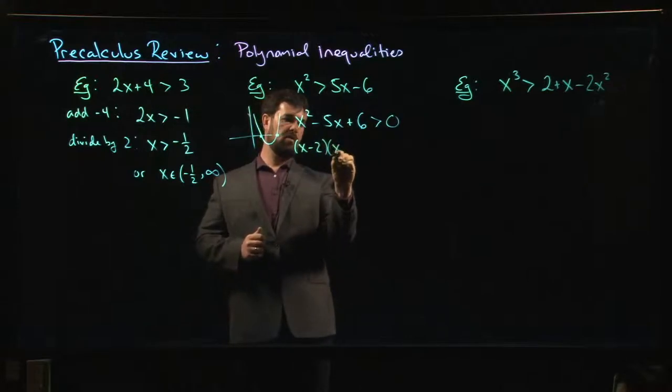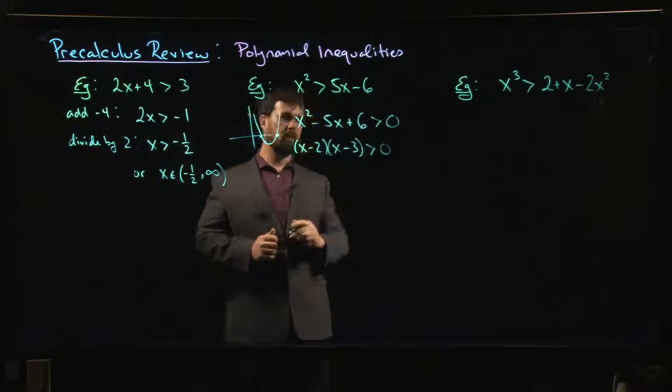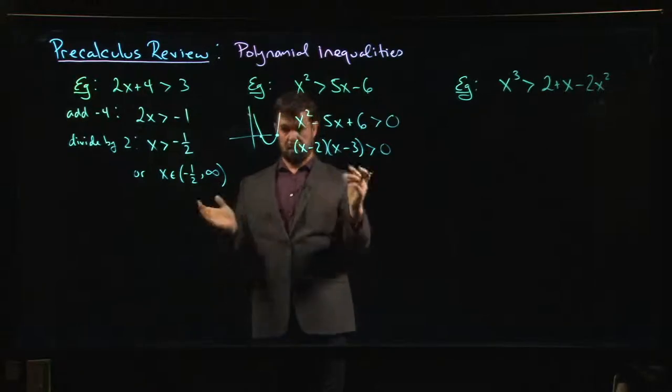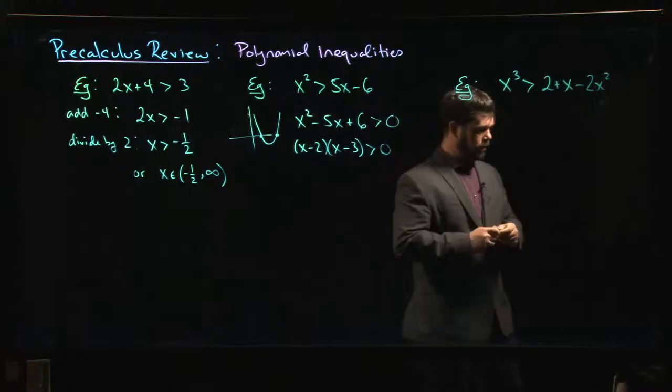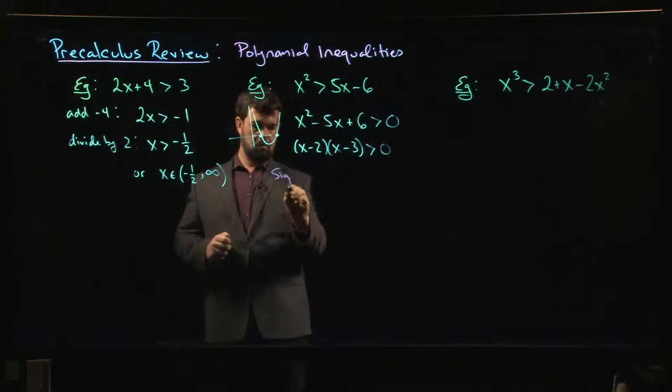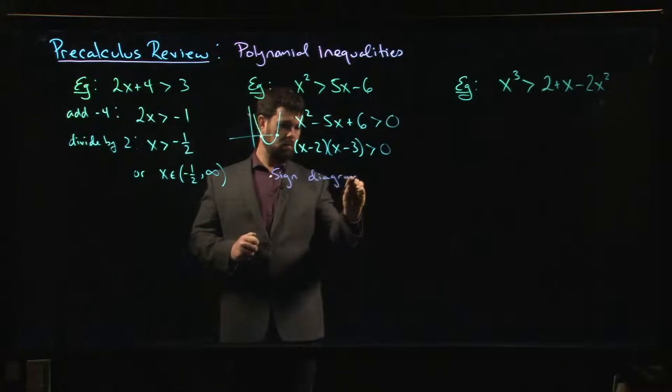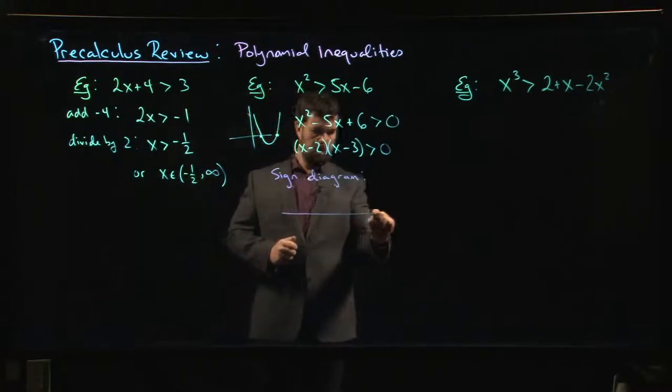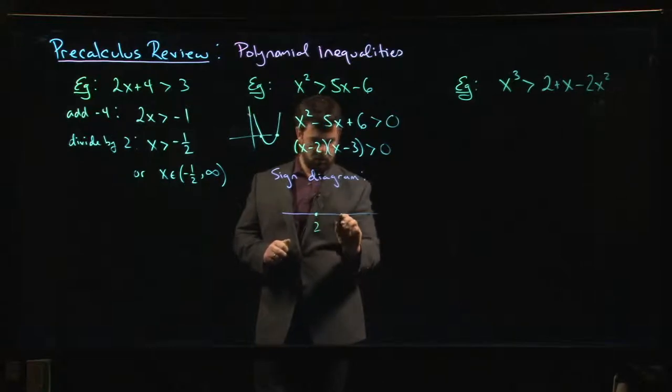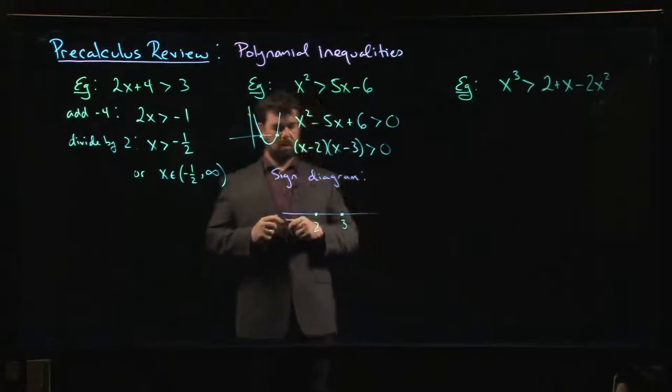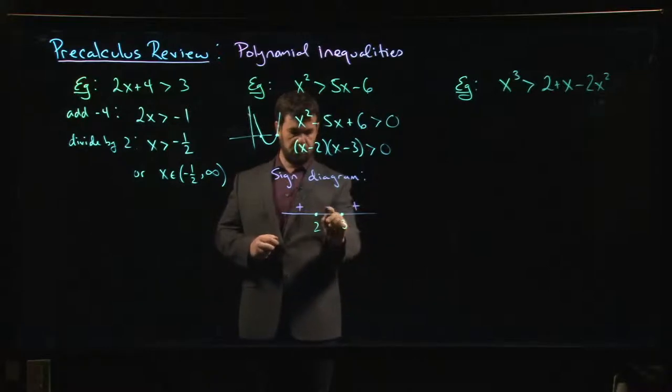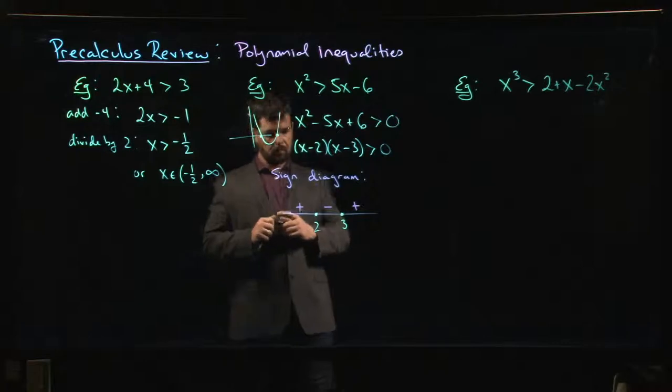So how do we find those roots? We factor. We've done this one before. In fact, we know this factors as (x minus 2) times (x minus 3). So solving the original inequality amounts to figuring out where is (x minus 2) times (x minus 3), where is that bigger than zero? So what you might do now is you might write down what we call a sign diagram. In a sign diagram, you just draw yourself a little number line. On that number line, you mark off the roots. So there are only two roots, 2 and 3.